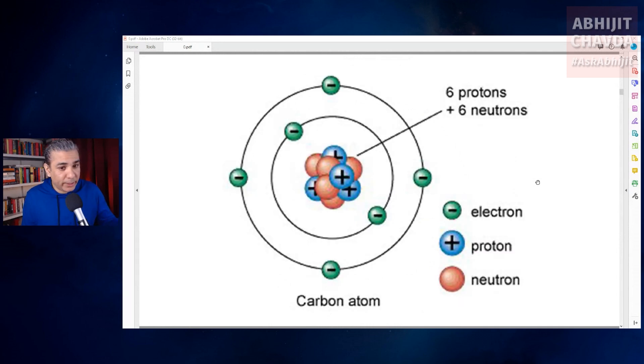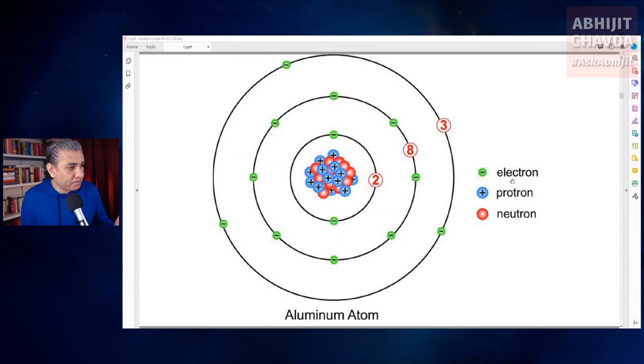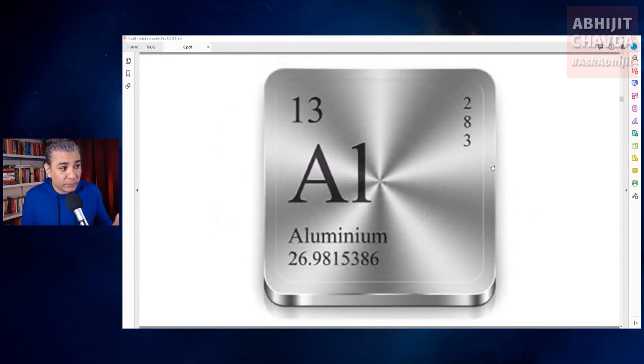The number of protons and neutrons in the nucleus determines the behavior and properties of an atom. If you create a nucleus of 13 protons plus 14 neutrons and surround it with 13 electrons, you get an aluminum atom. And if you group millions of these aluminum atoms together, you get the metallic substance called aluminum.